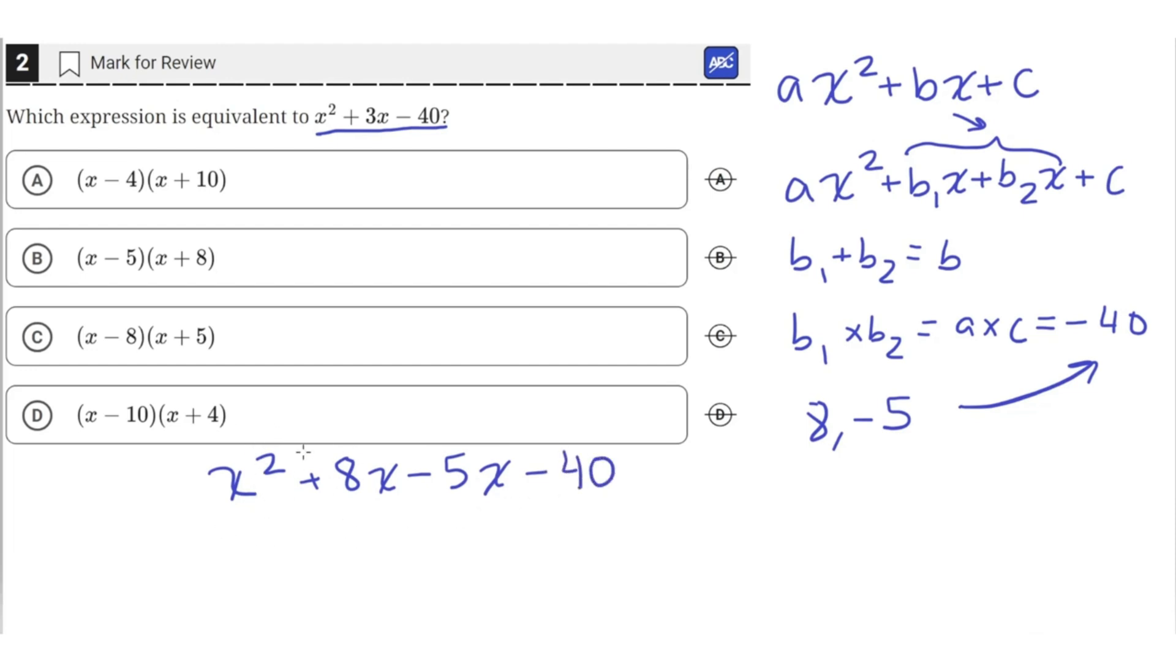We can factor out an x from these first two terms, and for the second two terms, we can factor out a negative 5.